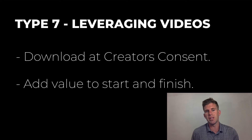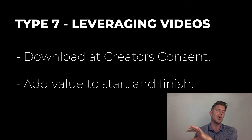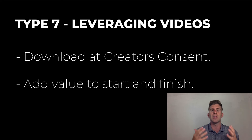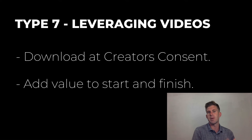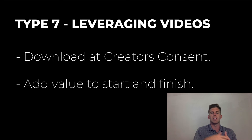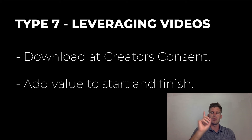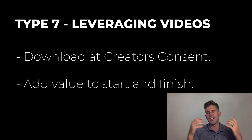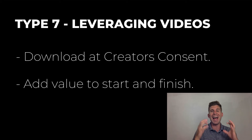Type number seven is leveraging videos. This is something new where you actually download someone else's video from their YouTube channel. You cannot just do this with anyone — you have to contact the video creator. Find them on Facebook, message them and say, 'Hey, can I download this video? I'm going to use it and add value, like an introduction or an outro.' That's a quick way to get content up. I have an example of a video I did promoting a specific product — watch that if you'd like to see an example of this.